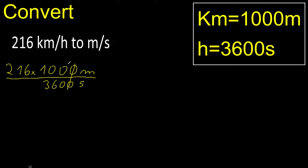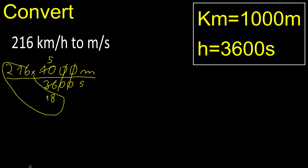The last digit is 0, therefore eliminate. Can be simplified because it can be divided by the same number. Divided by 2 — 10 divided by 2 is 5. 36 divided by 2 is 18. Can be divided by 2, divided by 2 is 9. Divided by 2.